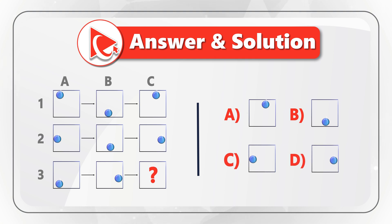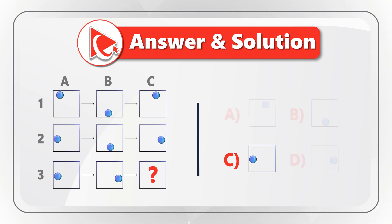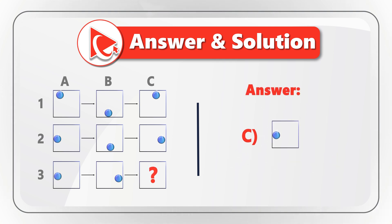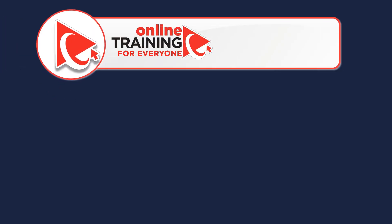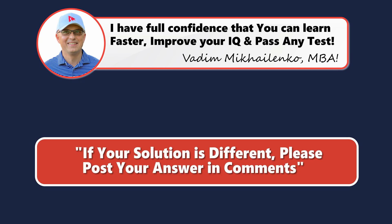If you look closely at the picture, the ball in row 3 moves from position 1 to position 2, and then to position 3. So the correct answer is choice C. Did you get the same answer? Or maybe you know tips on how to solve these problems better — please post and share them in comments so we can all learn.